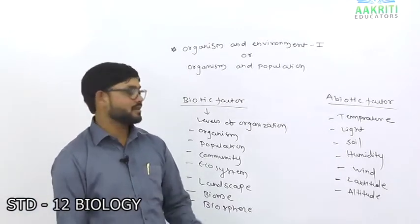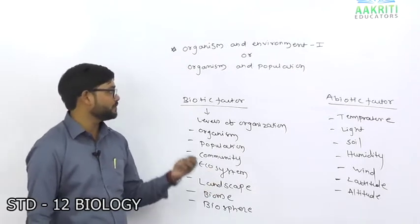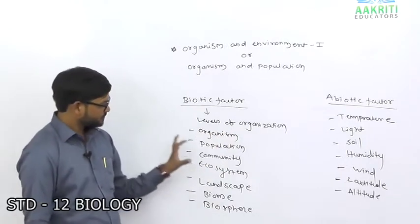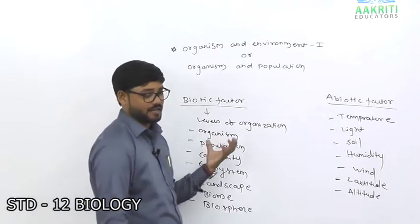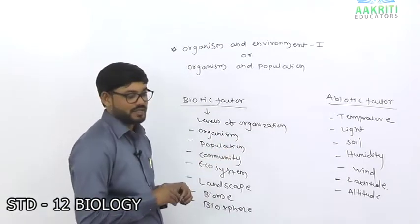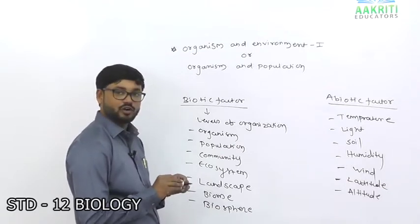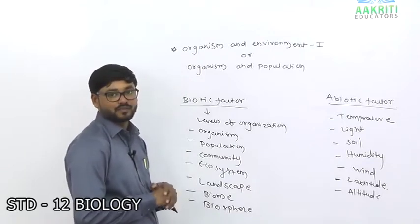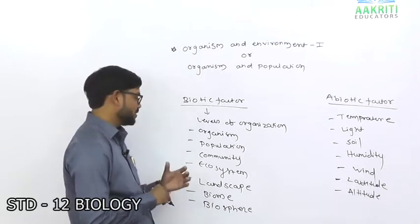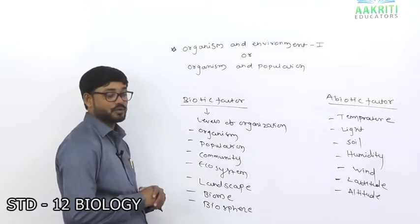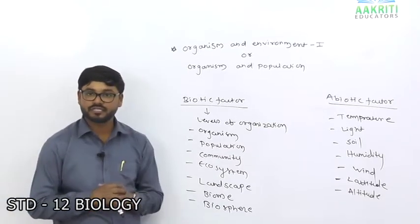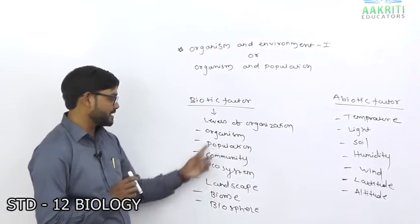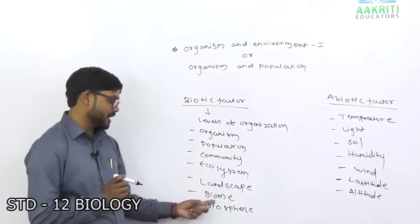Landscape is a unit of particularly land with different ecosystems. In a landscape, you get different ecosystems. Then particularly biome — because ecosystem, community, and organism have been discussed; now landscape is done. Biome means a particular area with different ecosystems.